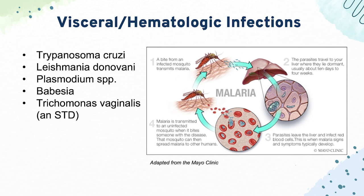Then we have Plasmodium species, which cause malaria. Know the three types — Vivax, Ovale, and Falciparum — including the life cycle, fever patterns, treatments, and prophylaxis for each type. Then we have Babesia, which is from the Ixodes deer tick — the same tick that vectors Lyme disease. It causes fever and hemolytic anemia in the northeastern United States, and on blood smear you can see a Maltese cross pattern.